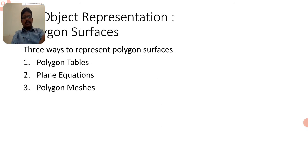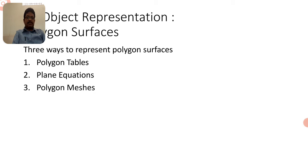Now we go through the detailed discussion of object representation — that is a set of polygon surfaces, or boundary representation. There are three ways to represent polygon surfaces: the first is polygon tables, the second is polygon plane equations, and the third is polygon meshes.